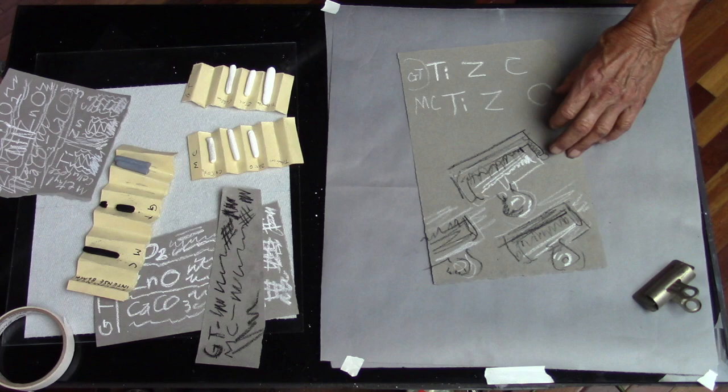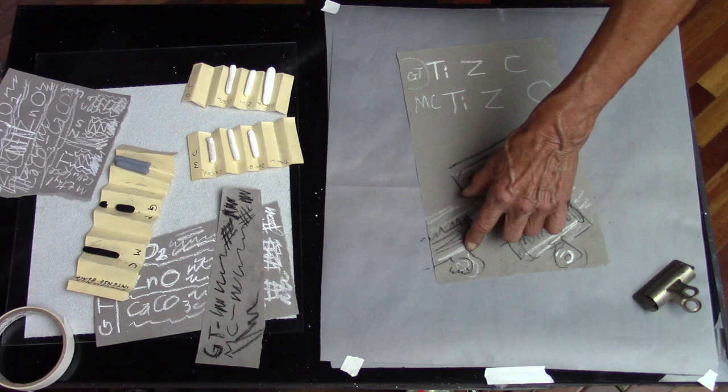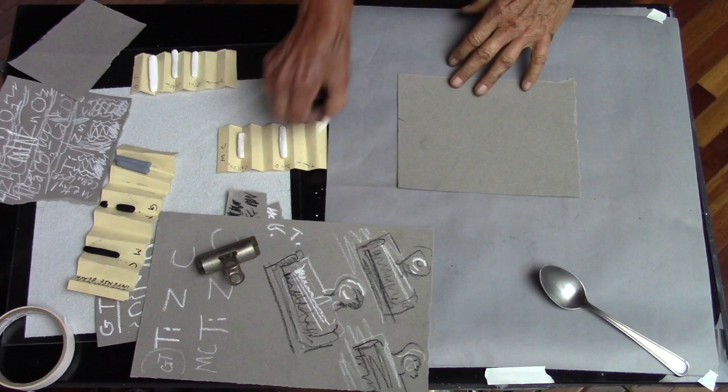So it gets more obvious when you're drawing with it. You can see this a little more intense probably. The calcium is always going to be more translucent.